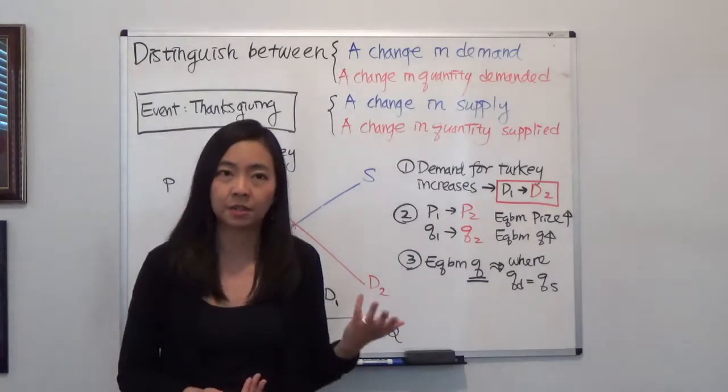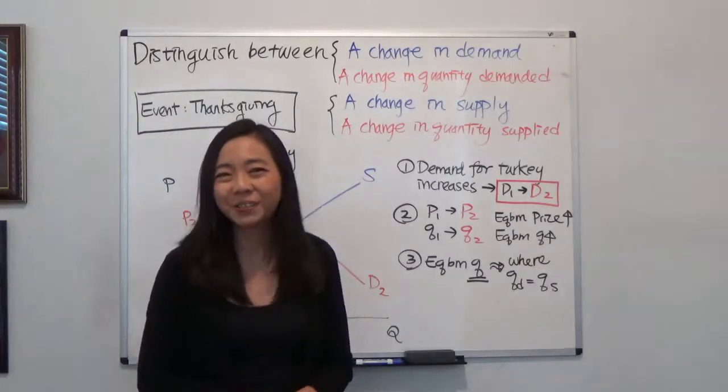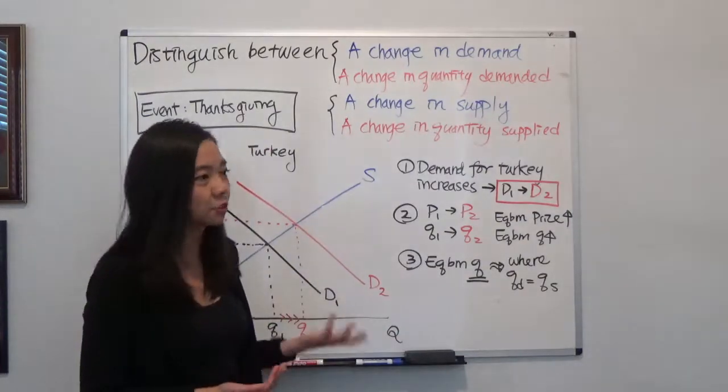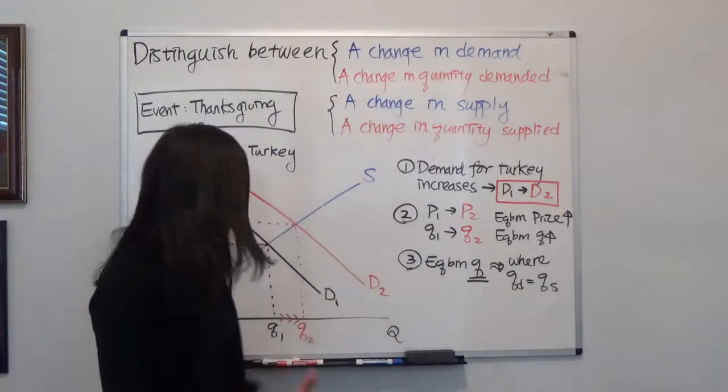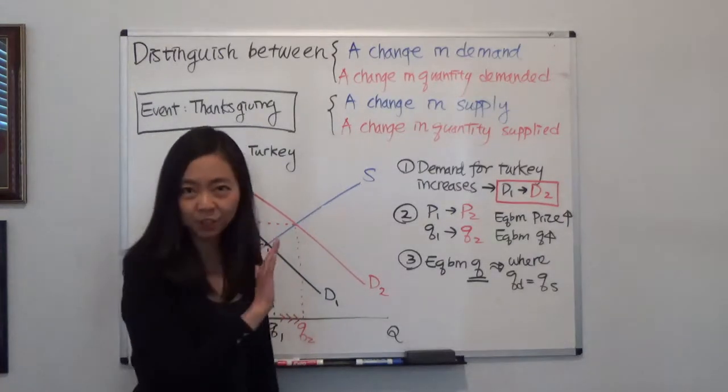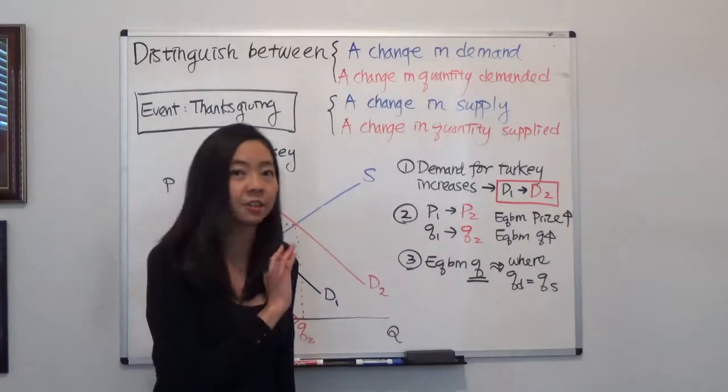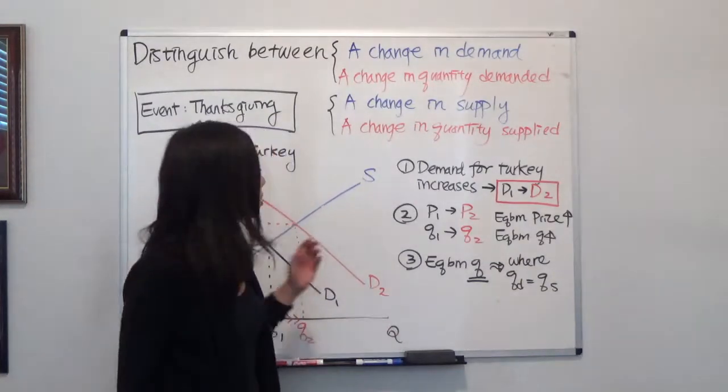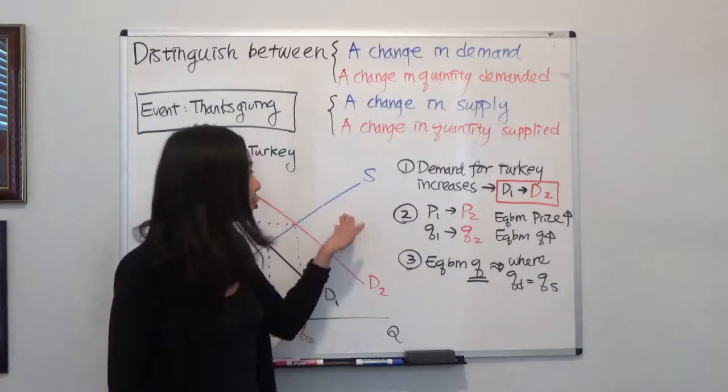So when you go to the supermarket at Thanksgiving holidays, you will see that, hey, indeed, the store has more turkeys to sell. Why is that? Because the quantity supplied has gone up. But remember, we did not change the supply side, meaning there's nothing changing in the farm. So we should not see the supply curve shift.